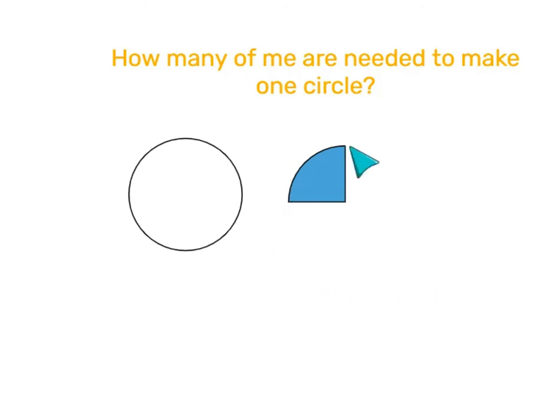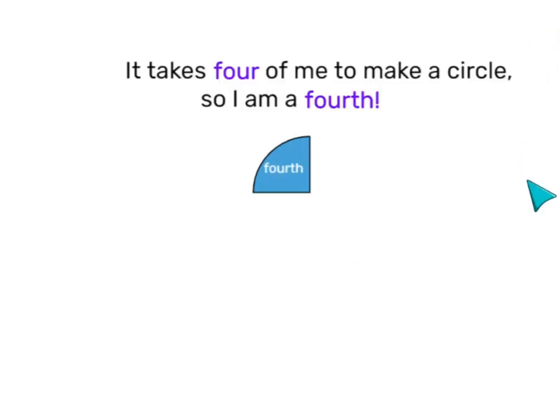How many of this blue piece will it take to make a whole circle? Four. It takes four of this piece to make a circle, so we call it a fourth.